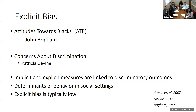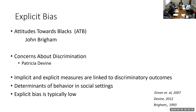To give some background on explicit bias: explicit bias is what is displayed or explicitly said or talked about. Implicit and explicit measures together are linked to discriminatory outcomes and are used as determinants of behavior in social settings like the hospital. Research also shows that explicit bias is typically low. In this quality improvement project, we use the ATV — the Attitudes Towards Black scale — developed by John Bruehm, and the Concerns About Discrimination scale, developed by Patricia DePain.